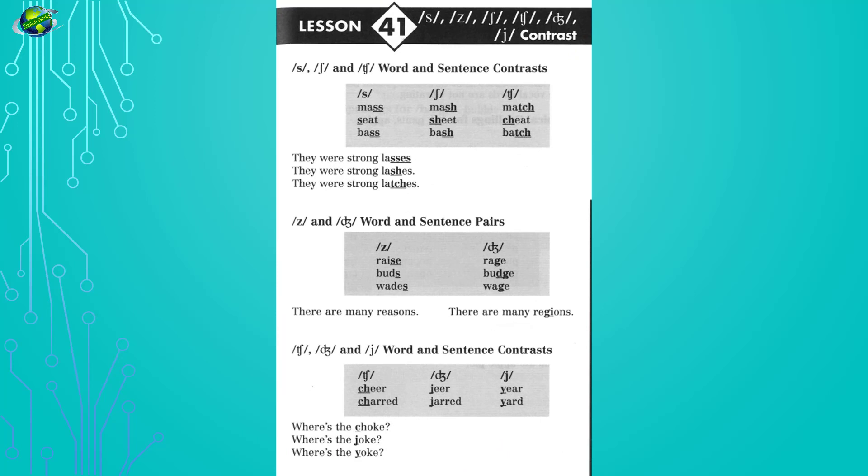Lesson 41: S, Z, Sh, Ch, J contrast. Listen and repeat. Masks, mash, match. Seat, sheet, cheat. Bass, bash, batch. They were strong lasses. They were strong lashes. They were strong latches.